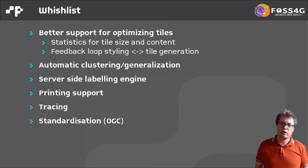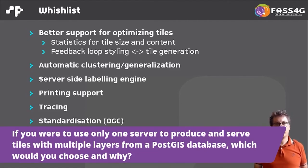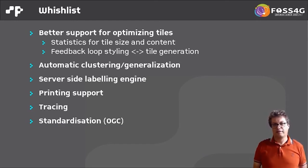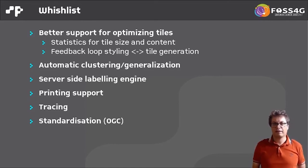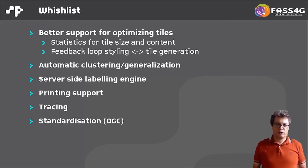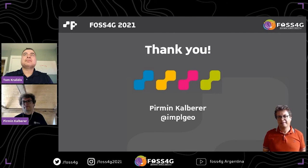The last point is standardization. There is work going on like the OGC Tiles specification, but from what I've heard it's more about the API for getting tiles and styles — not a standard for the content or format of tiles. So you can get styles and tiles, but the hard part — decoding tiles and applying styles — is not standardized. This is my last wish, and I still encourage you to use vector tiles. Thank you for your attention and I look forward to seeing you in person at another FOSS4G.